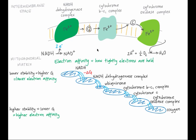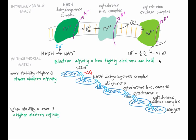So the iron ions in each complex have a different electron affinity. The iron in the cytochrome BC1 complex has a higher electron affinity than does iron in NADH dehydrogenase complex. Movement of electrons in this direction is spontaneous because the delta G of each step is negative. Processes with a negative delta G release energy, and this energy is harnessed to pump hydrogen ions from the mitochondrial matrix into the intermembrane space.